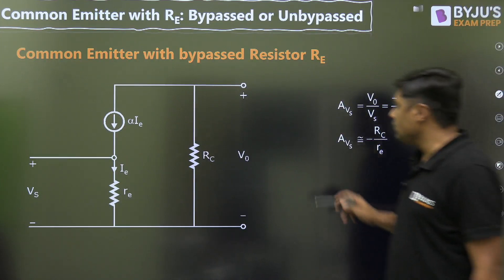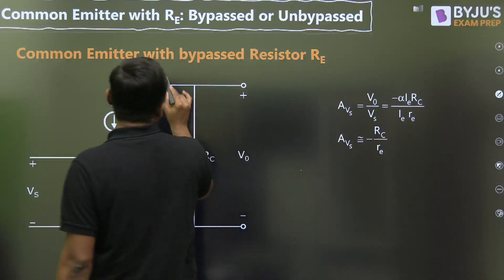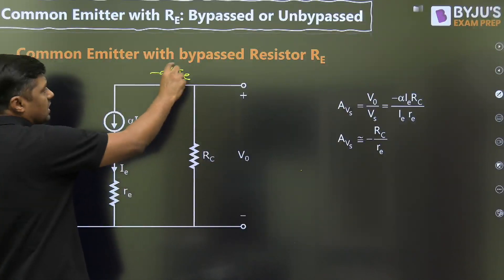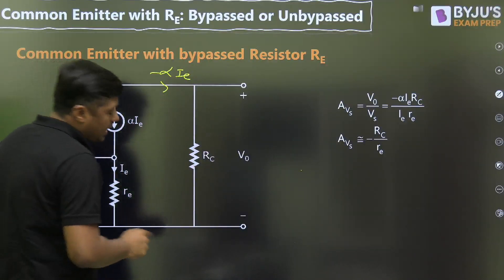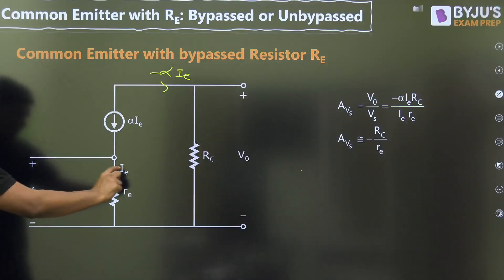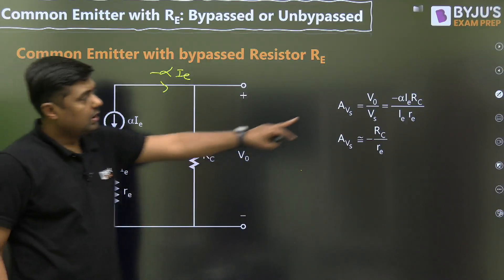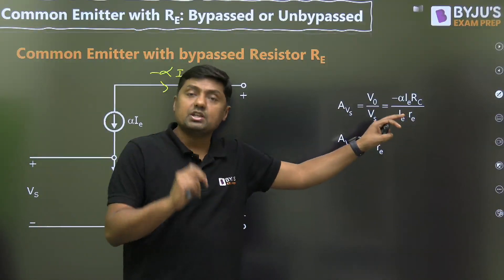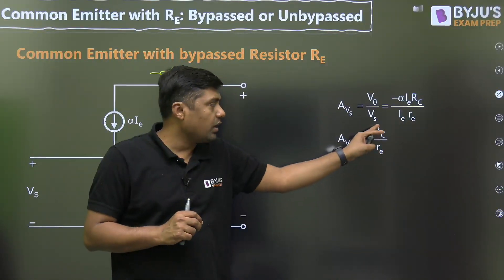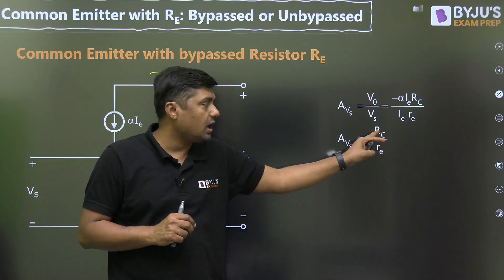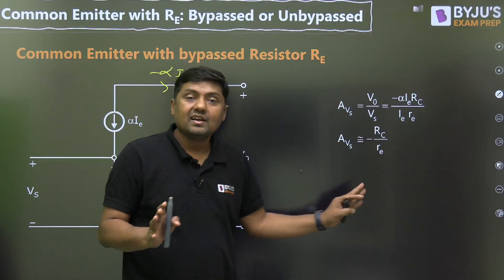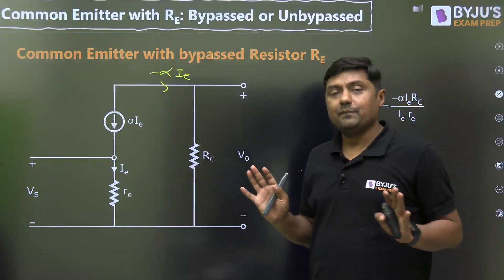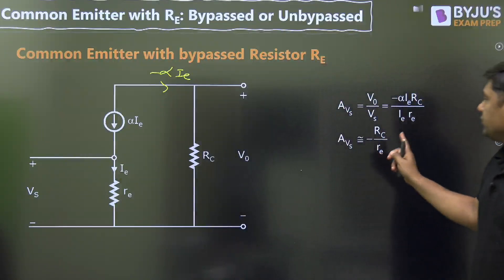From the small signal model for bypassed RE: V0 equals minus alpha·IE times RC, and Vs equals IE times small re. IE terms cancel and alpha ≈ 1 because beta is very large. Therefore the voltage gain is minus RC divided by small re. Here there is no role of capital RE — this is the formula for bypassed RE.